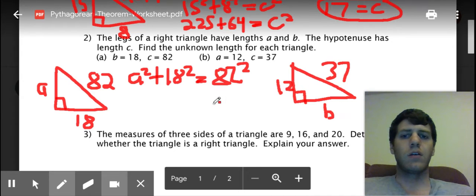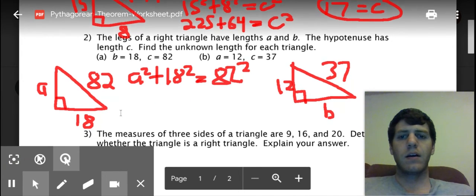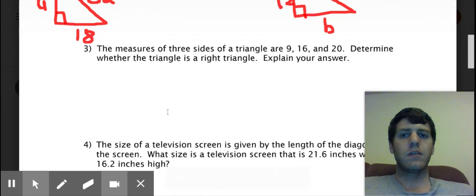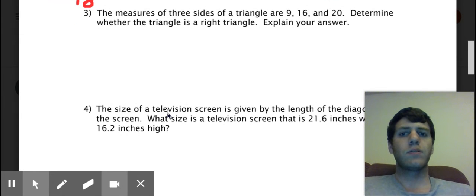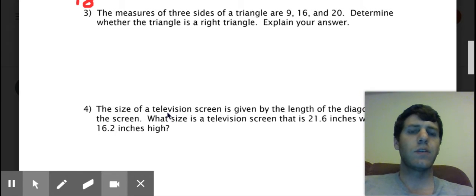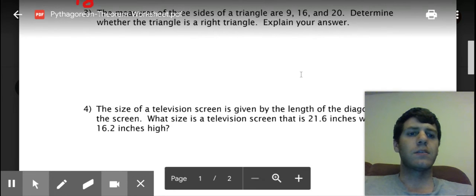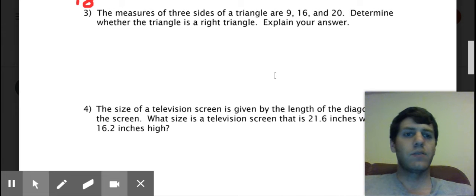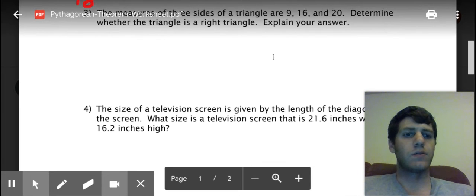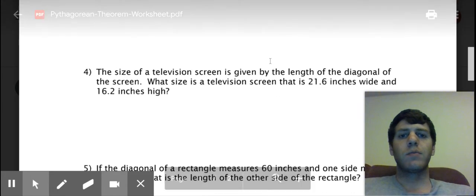Okay, three, this asks you the measures of three sides of a triangle are 9, 16, and 20. Determine whether the triangle is a right triangle. So you need to see if a squared plus b squared is going to equal c squared. Okay, the hypotenuse is the longest side so you should be able to know that c is 20. And then you need to check the Pythagorean theorem to see if those are equal. Is 9 squared plus 16 squared equal to 20 squared? If it is then it's a right triangle, if it's not then it's not a right triangle.